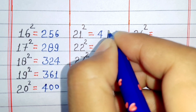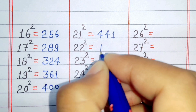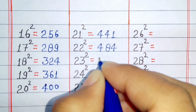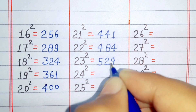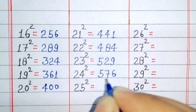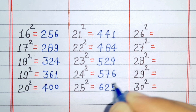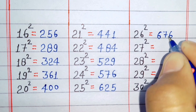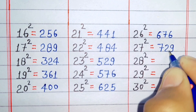Square of 21 is 441. Square of 22 is 484. Square of 23 is 529. Square of 24 is 576. Square of 25 is 729.